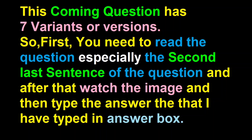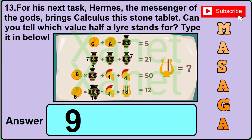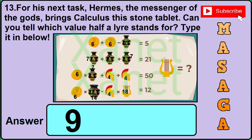Now question number 13 has got 7 different variants or versions. First you need to read the question, especially the second last sentence, and after that watch the image and type the answer. For example in version 1, the second last sentence reads 'can you tell which value half a liar stands for?' If you find this same image, the correct answer will be 9.